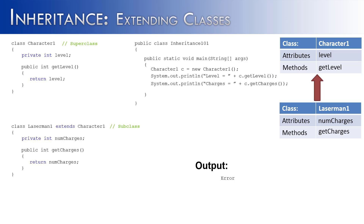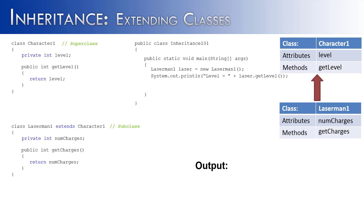Let's try it with a subclass object instead. We say: laserMan1 laser = new laserMan1(). Then we call laser.getLevel() — this is interesting because we're using a method from the superclass on a subclass object. This works 100% because laserMan is a character and can use the features of its superclass. The output would be 'level equals 0'. We can also call laser.getCharges(), giving us 'charges equals 0'. So laserMan uses both its superclass features and its own features.